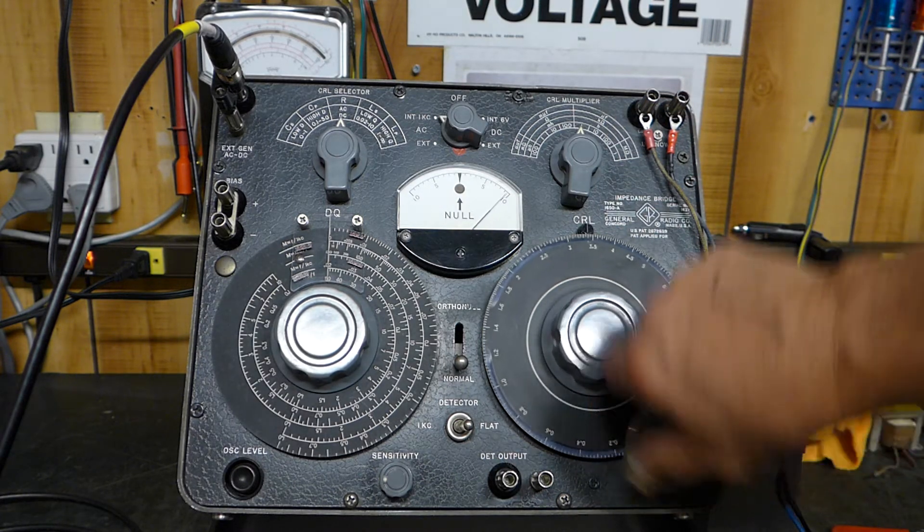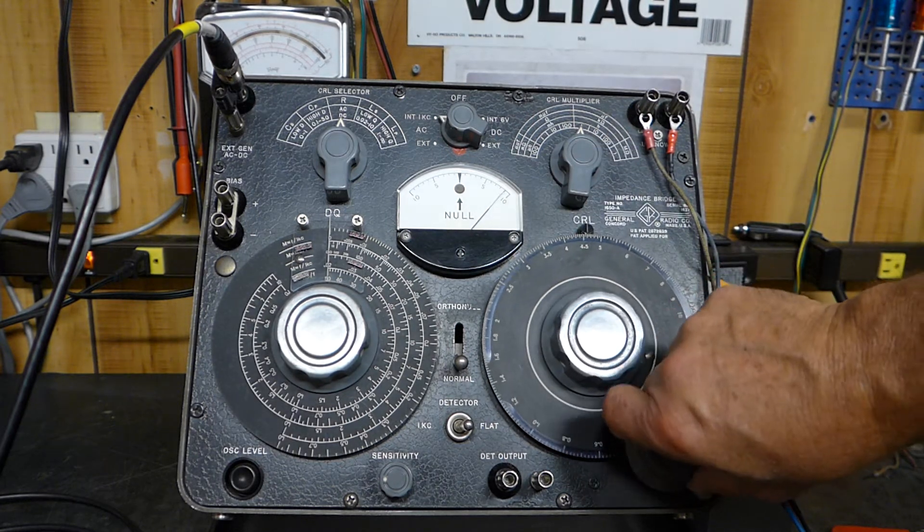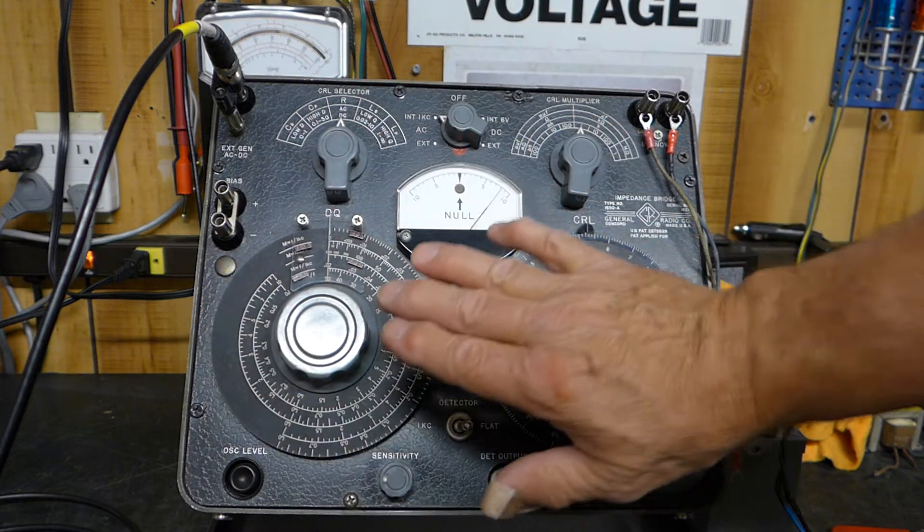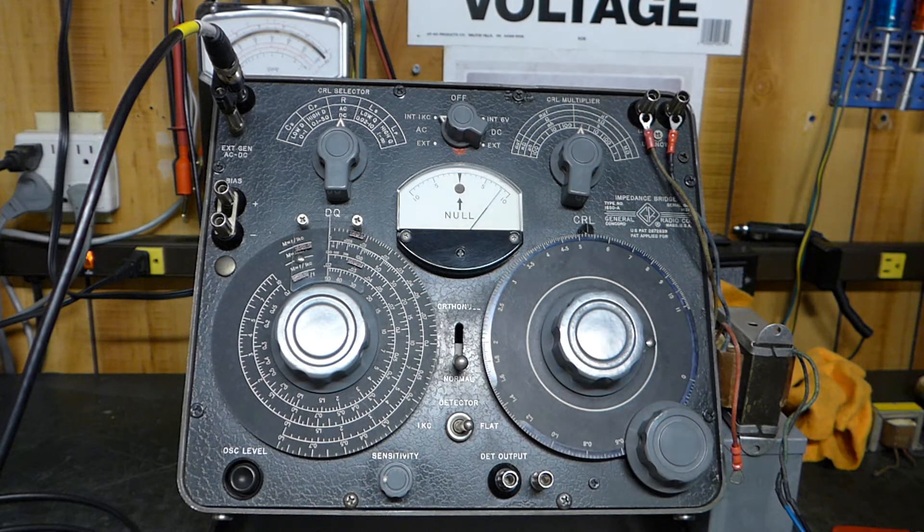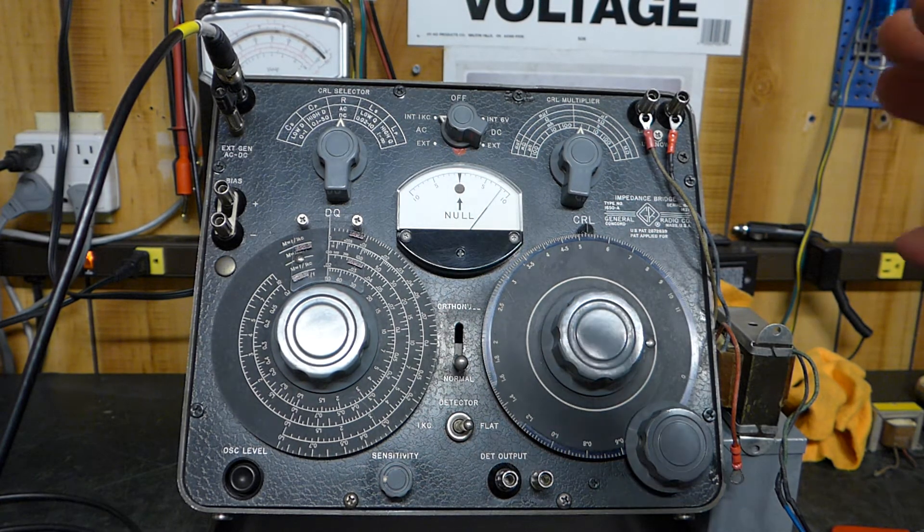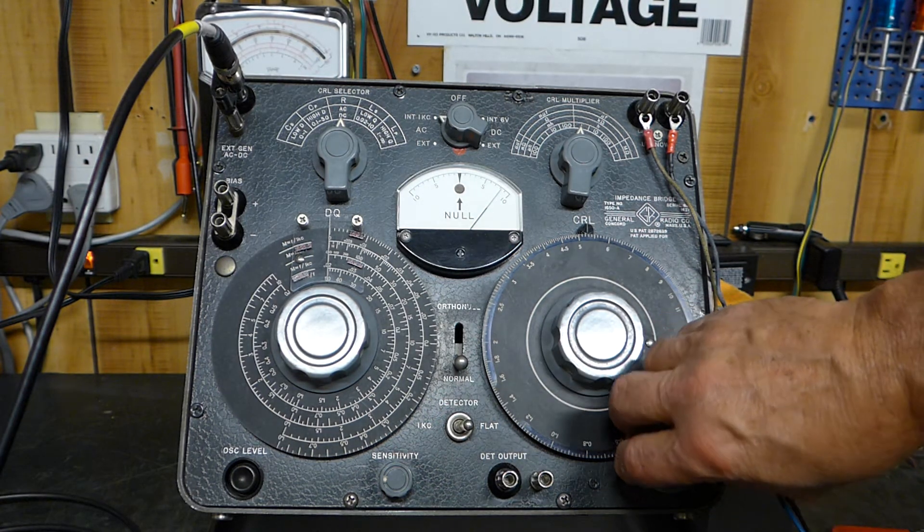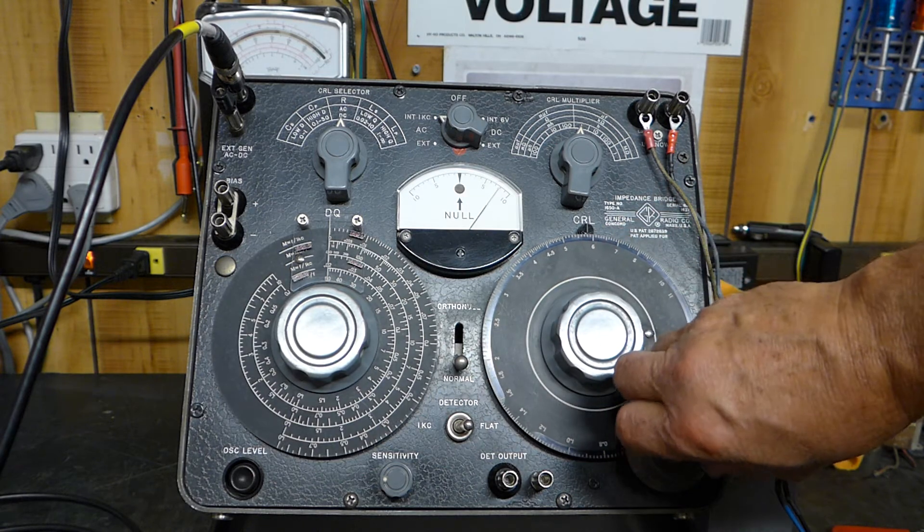If we turn this thing over to where's the null, right here, we don't get a perfect null. So it's one of the things that I've learned about this really nice old General Radio bridge is that you need to know pretty much the range that you're looking for, otherwise it can be very time-consuming.